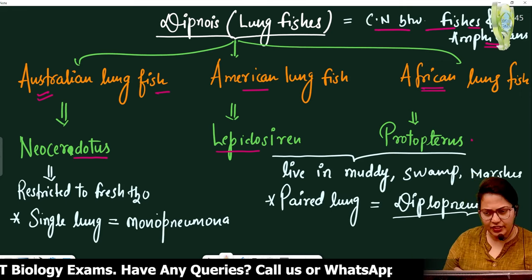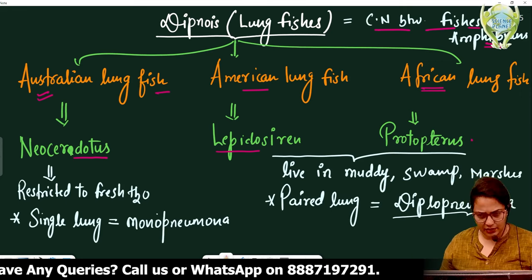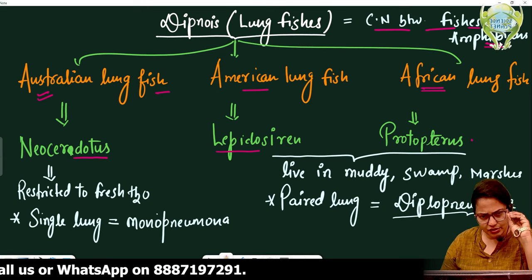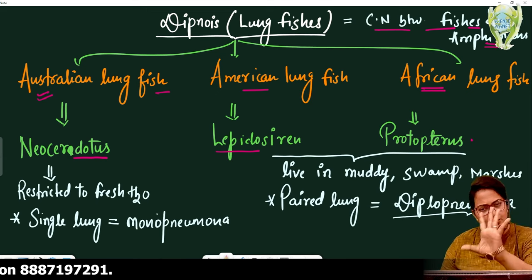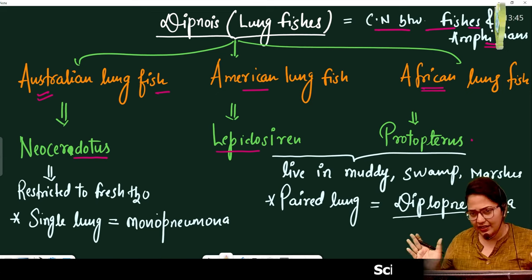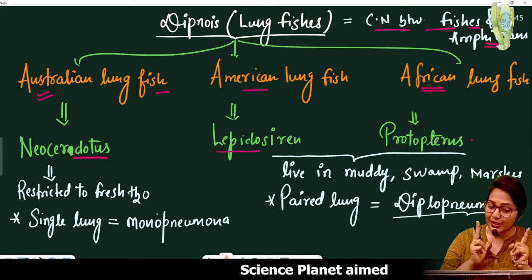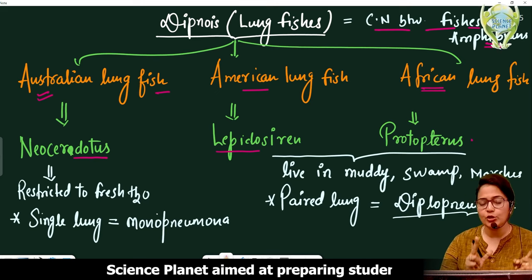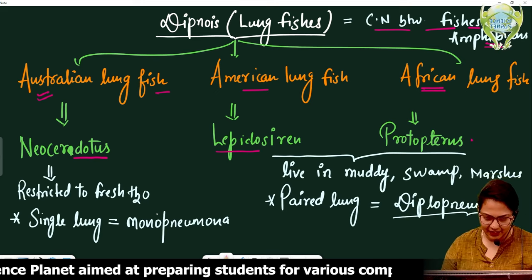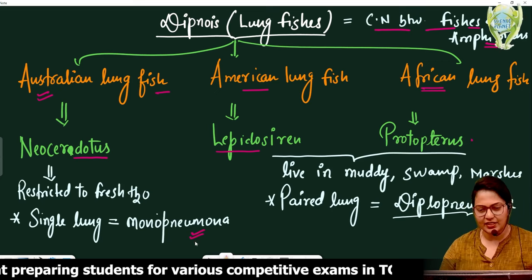The Australian lung fish lives in fresh water. It cannot survive without water. It has only a single lung, so it is called Mononeumona.